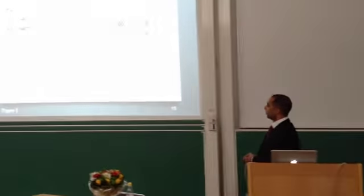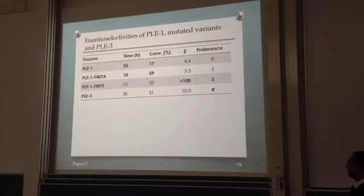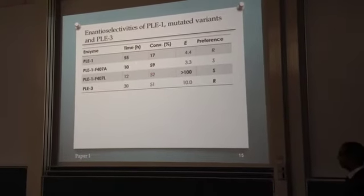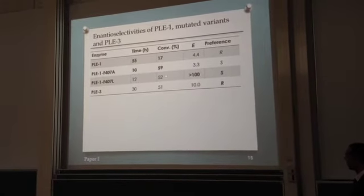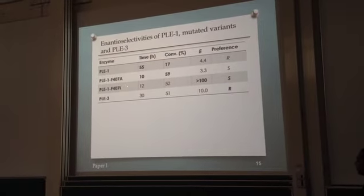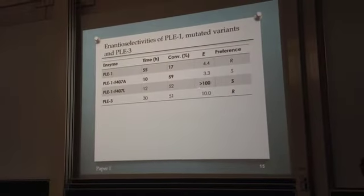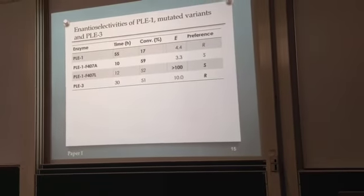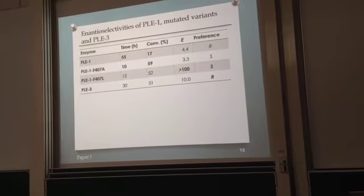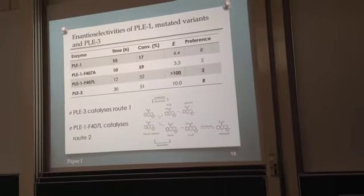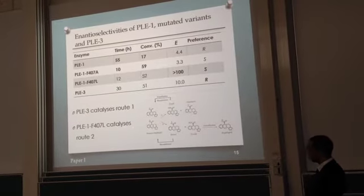The results show that BLE-1 wild type is slow, showing only 17% conversion after 55 hours, while the mutation we developed converted 59% after 10 hours, which is a significant increase. More interestingly, one of the mutations at the same position — leucine — showed inversion of the enantioselectivity from E=4 to more than 100. On the other hand, BLE-3 isoenzyme showed enantioselectivity of E=10 toward the R-isomer. This concludes that BLE-3 can catalyze route 1, and the engineered BLE-1 mutant can catalyze route 2.